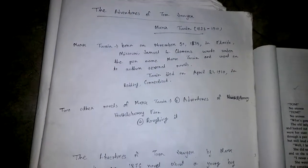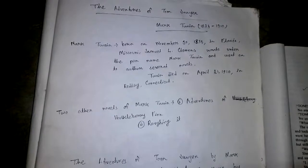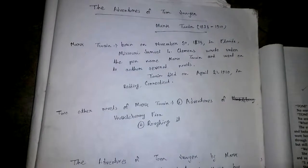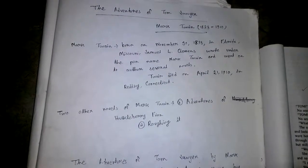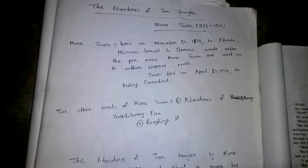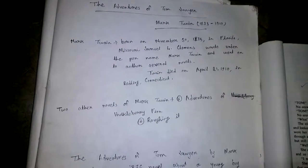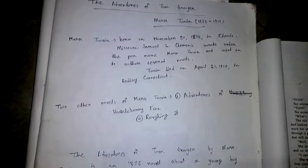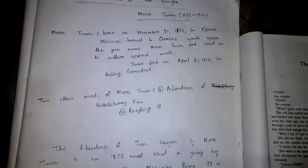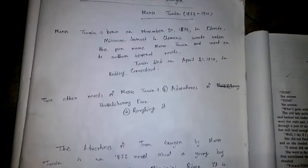Mark Twain's birth: 1835, death: 1910. Mark Twain was born on November 13, 1835, in Florida, Mississippi. Samuel L. Clemens wrote under the pen name Mark Twain and went on to author several novels. Twain died on April 21, 1910.